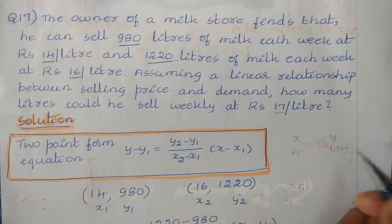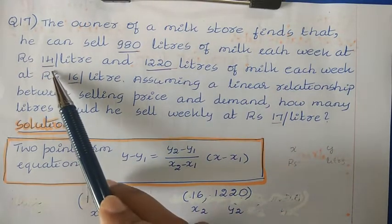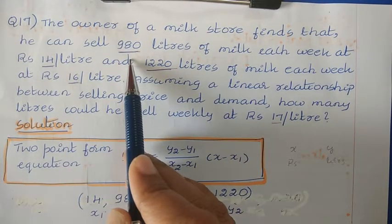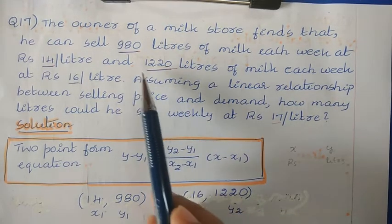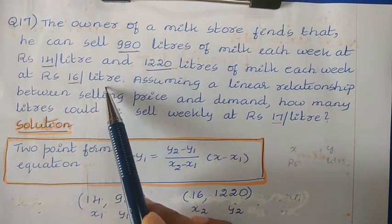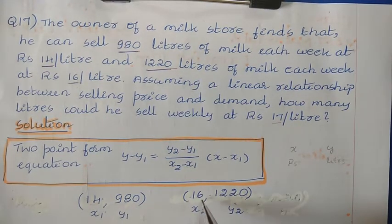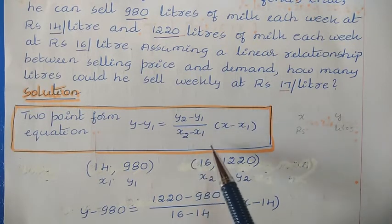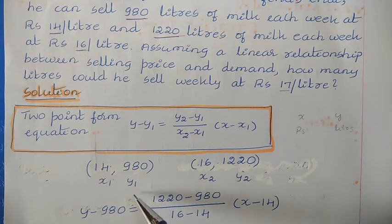We have two values: x is the rupees per liter and y is the total number of liters of milk. For 14 rupees per liter the owner can sell 980 liters, giving the point (14, 980). For 16 rupees per liter he can sell 1220 liters, giving the point (16, 1220). Since we know two points, we apply the two-point form equation.